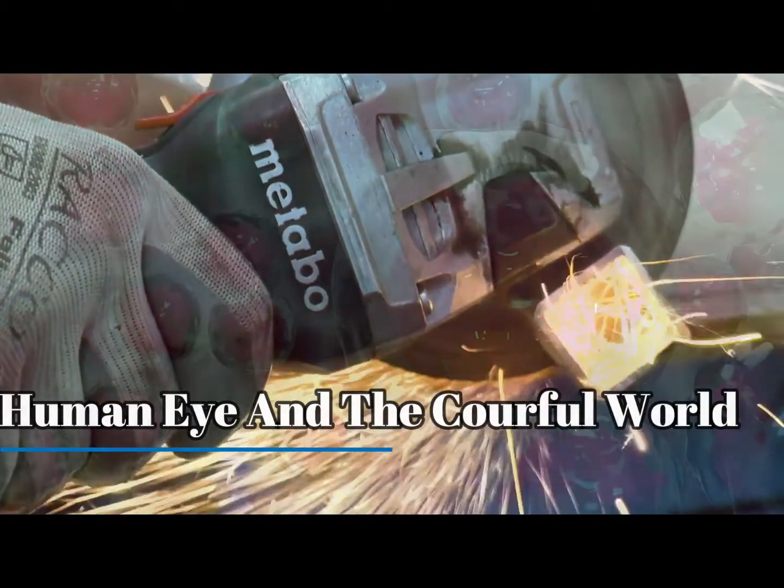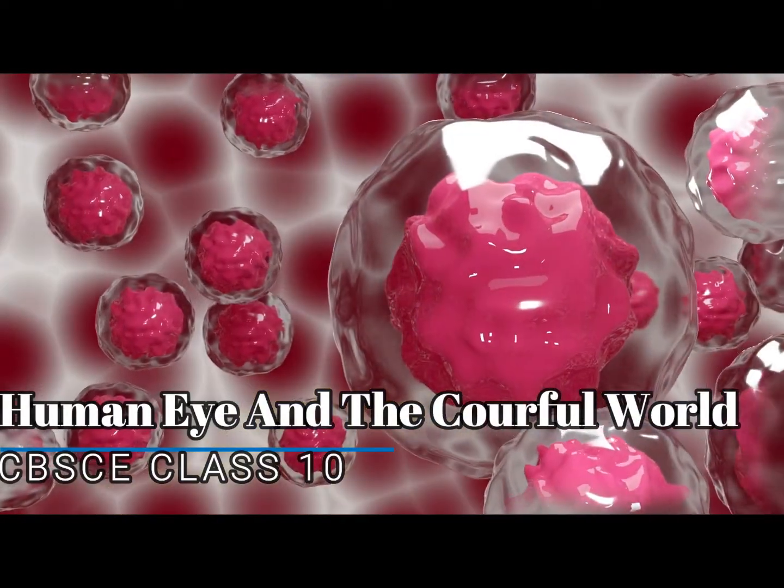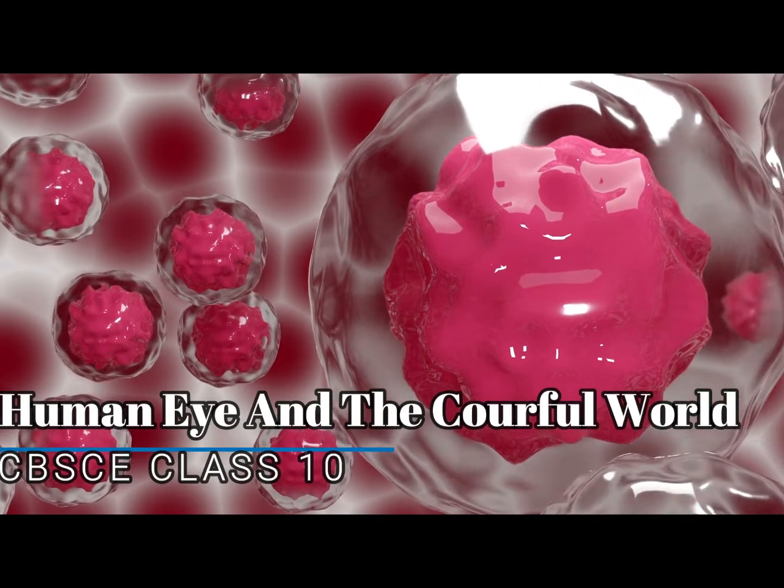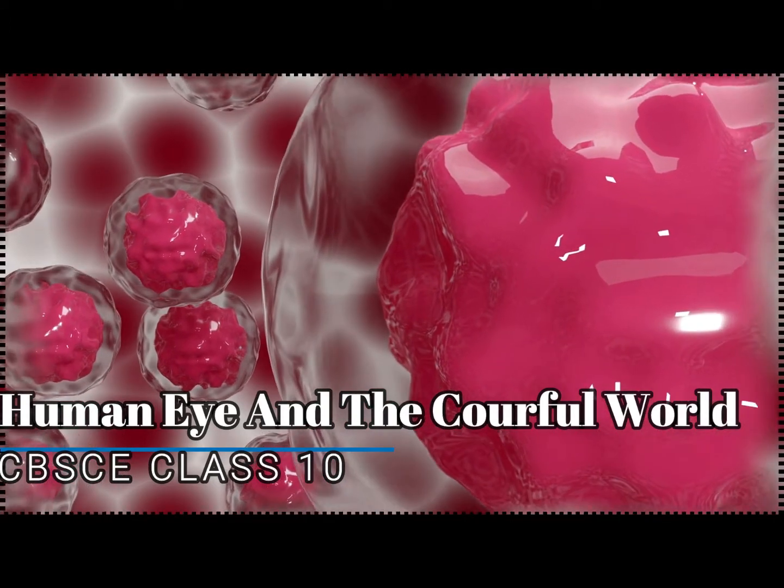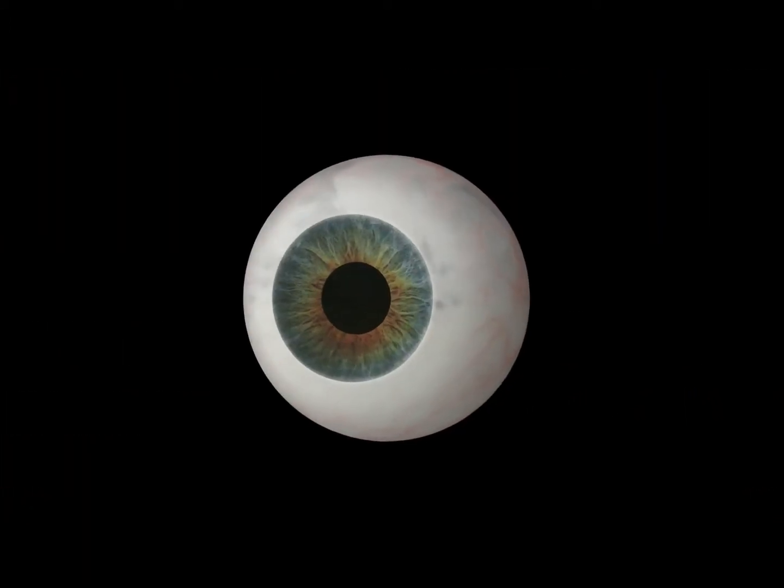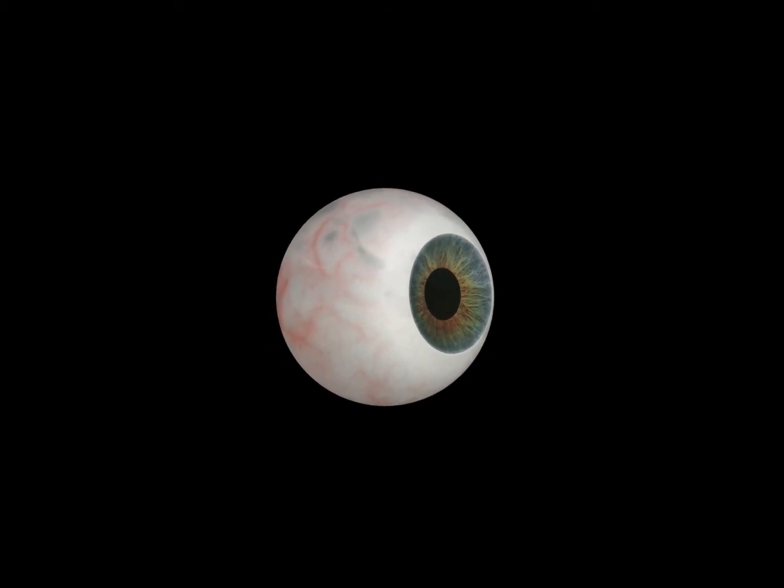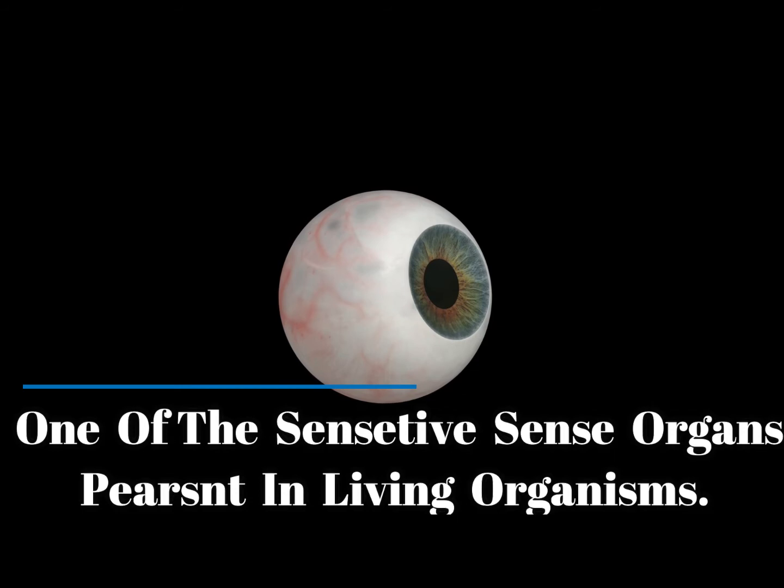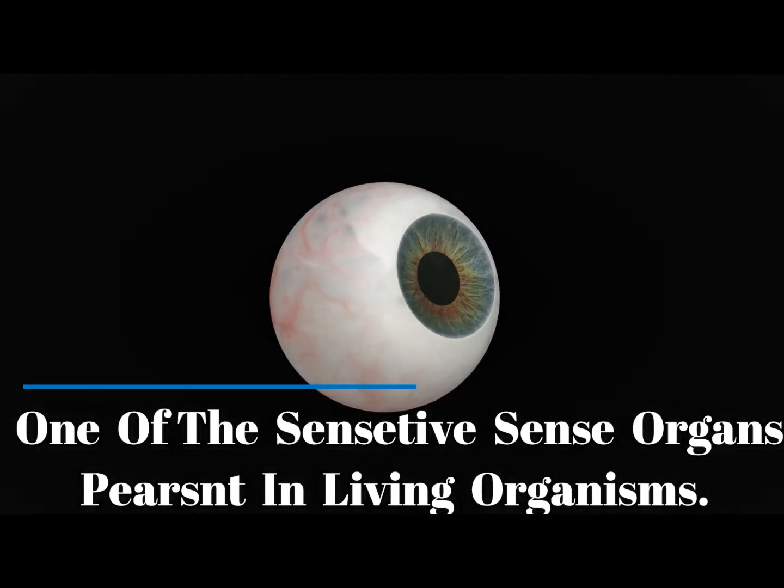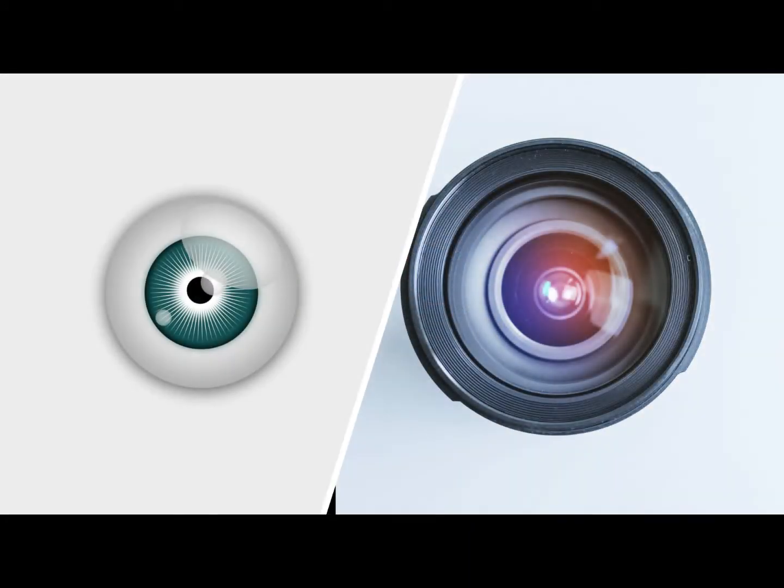In the CBSE Class 10th chapter, The Human Eye and the Colorful World, a lot of things are covered. The first thing that arises is the human eye. What is human eye? Human eye is one of the sensitive sense organs present in living organisms. It acts like a camera and human eye structure is very important.